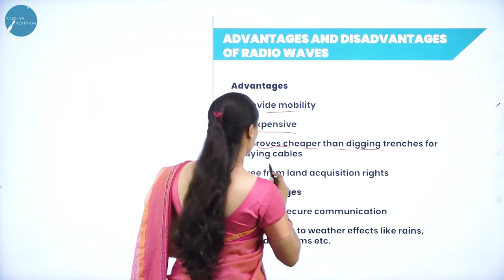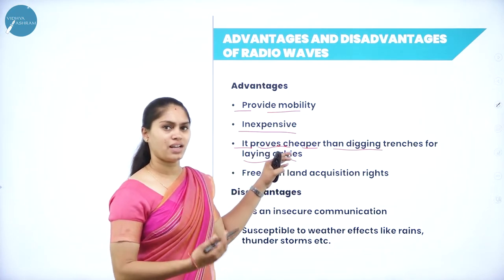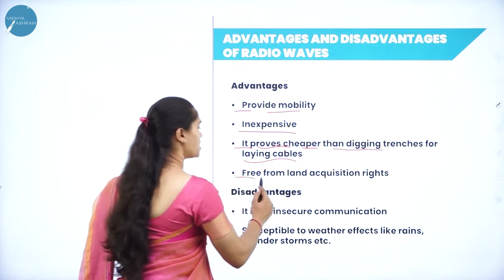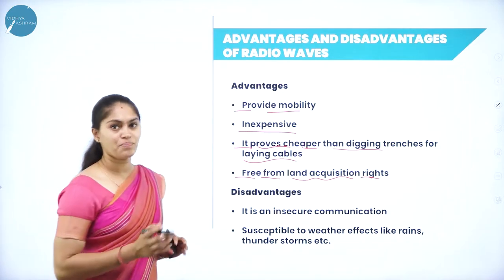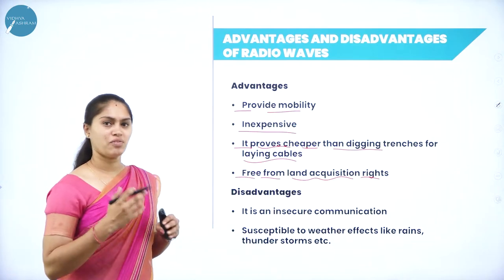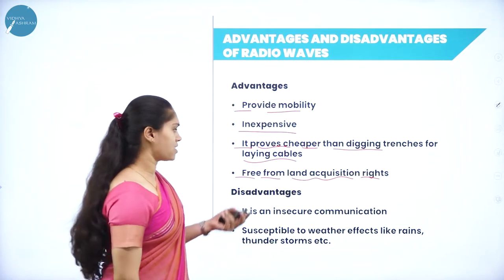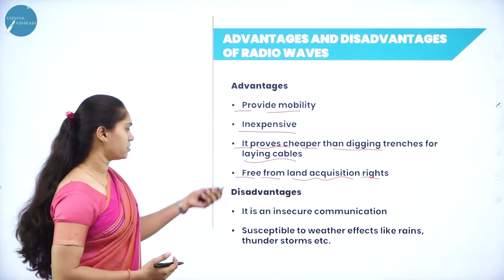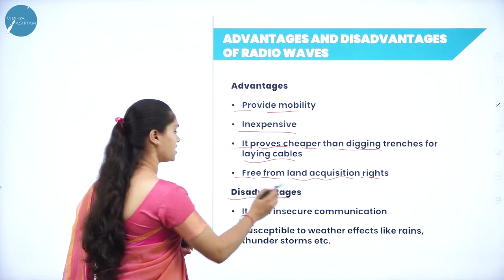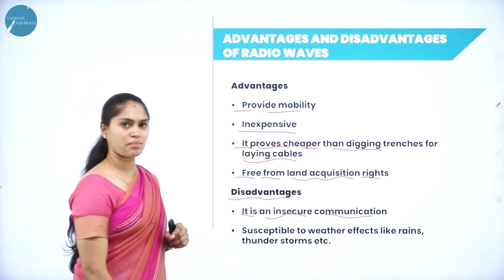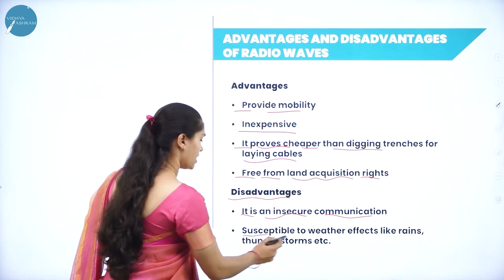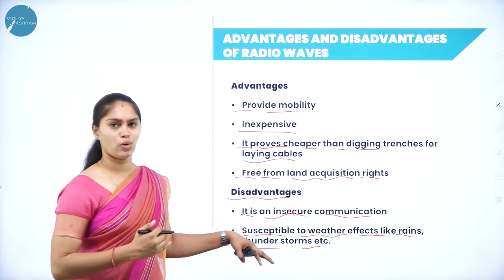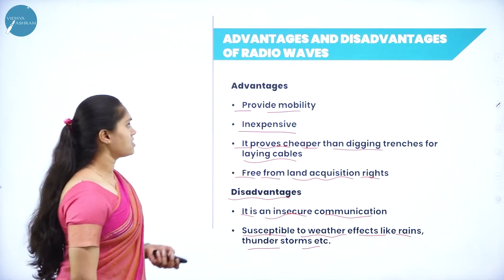Radio wave transmission is cheaper than digging trenches for laying cables — no trenches are needed, only antennas, transmitters, and receivers. It is also free from land acquisition requirements. Disadvantages include insecure communication and susceptibility to weather effects such as rain and thunderstorms, which can weaken the signals.